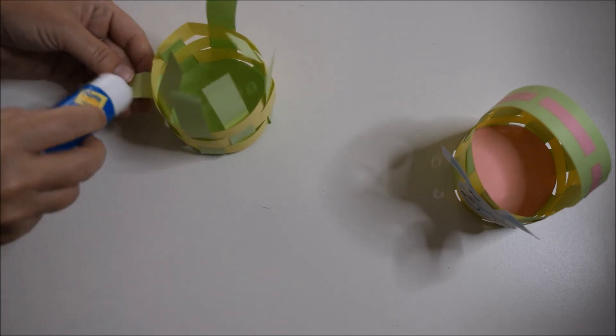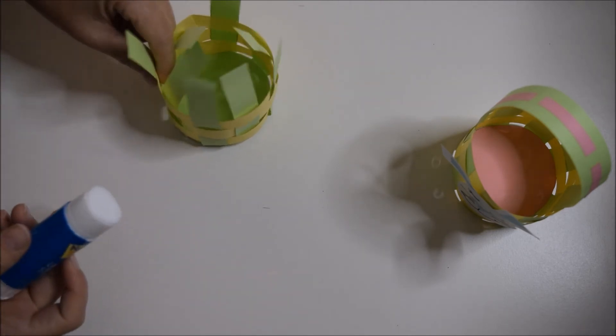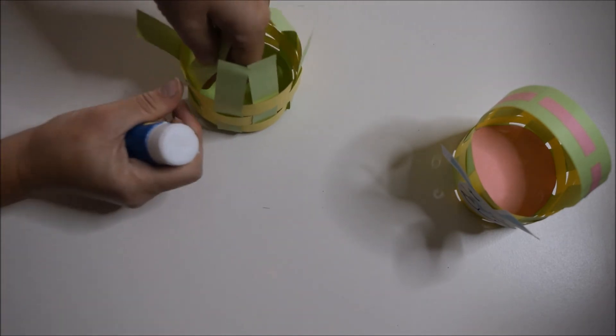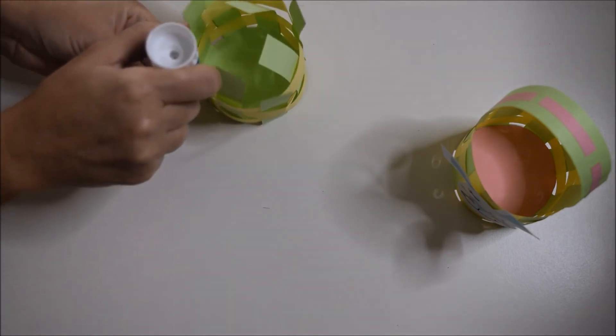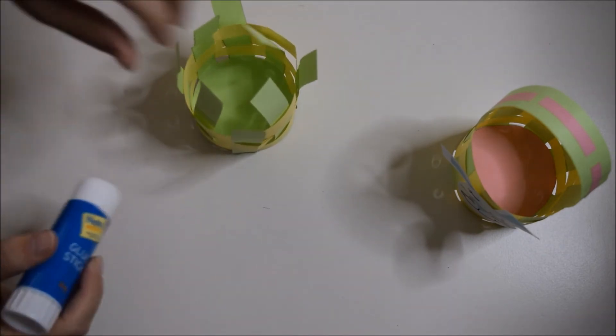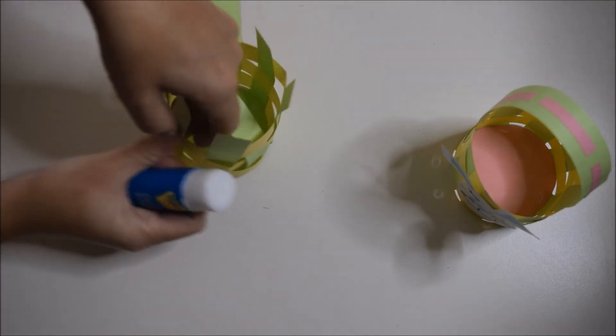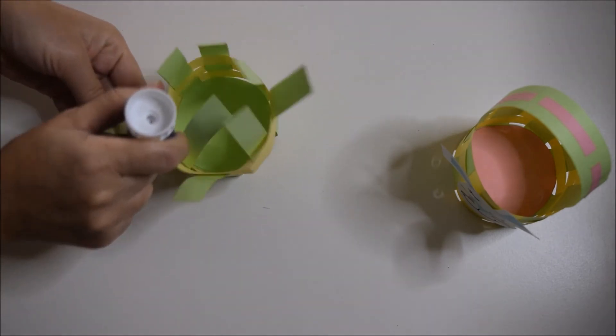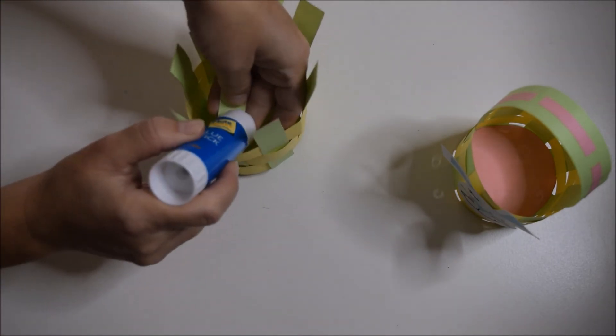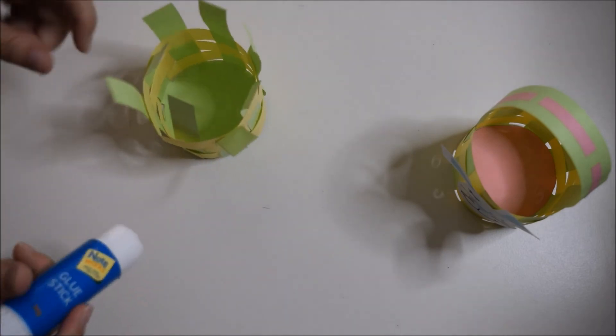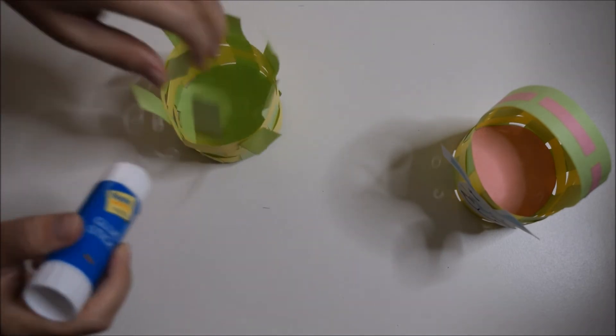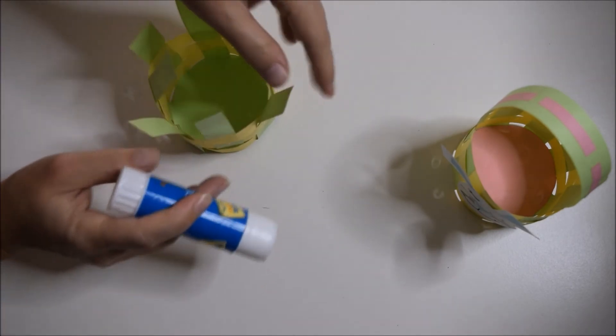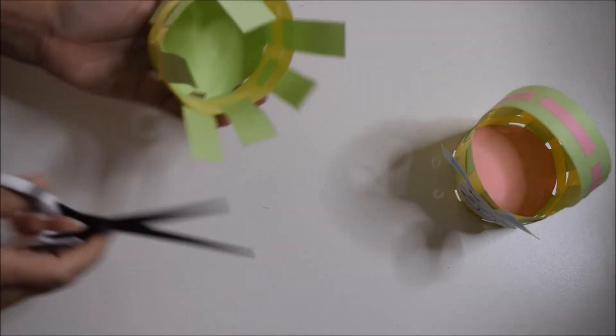Now we're just going to glue those strips, the green strips down, just to hold it in place. And you can snip away the excess.